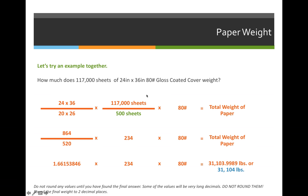In the middle part of our formula, we'll take the number of sheets needed — 117,000 sheets — and divide by 500, and then multiply the whole thing times the basis weight, which is 80 pounds.